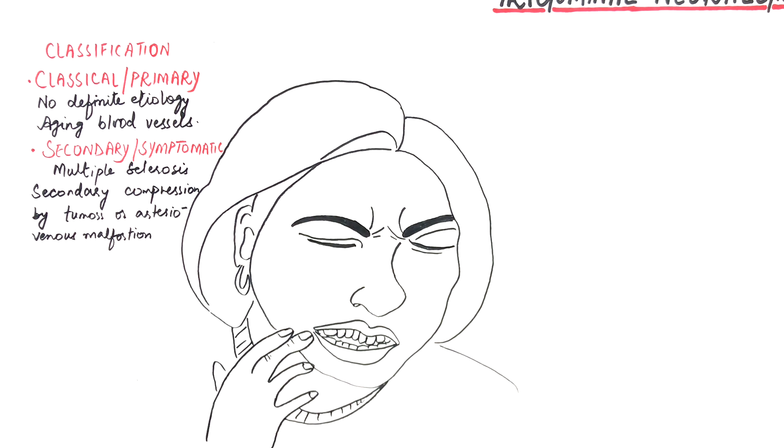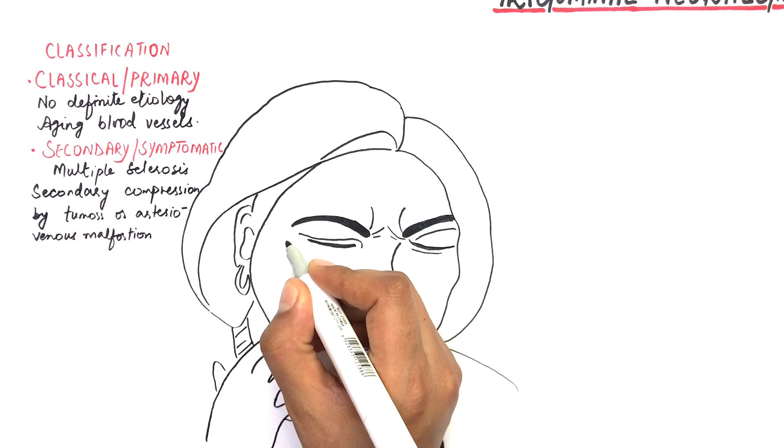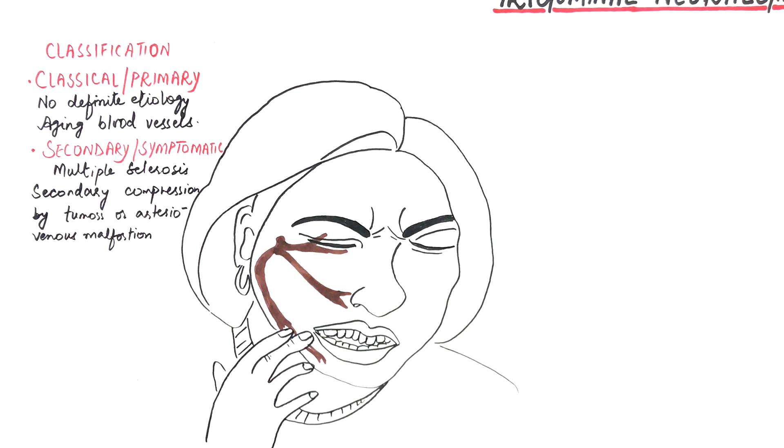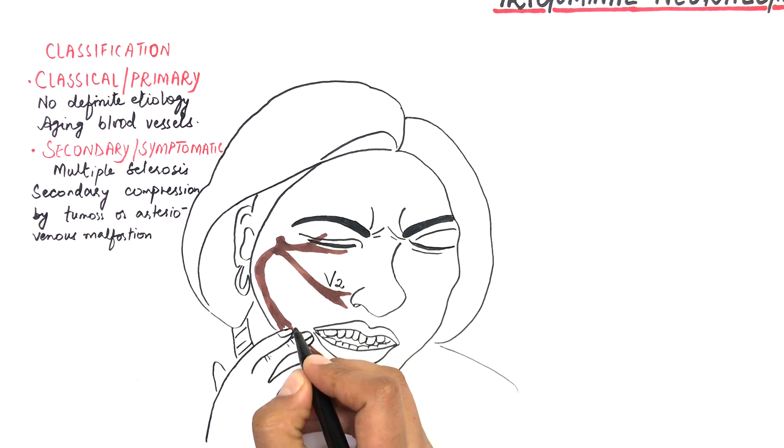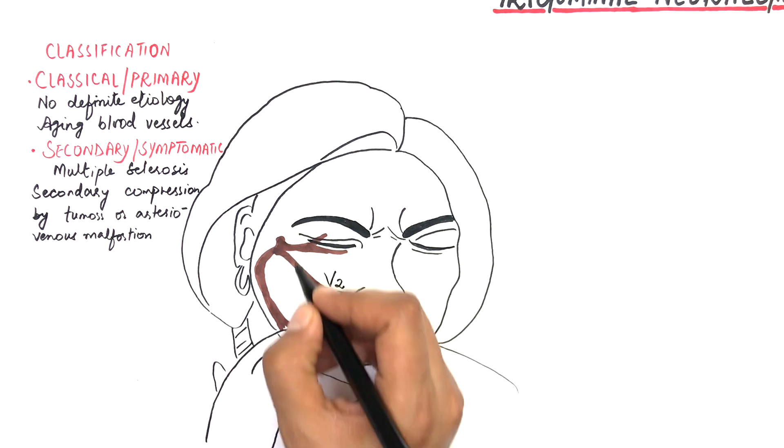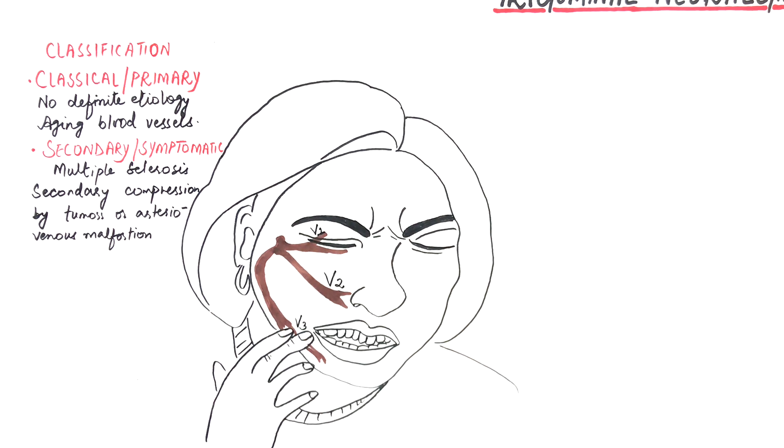In the majority of cases, the pain is located in the maxillary and mandibular divisions of the trigeminal nerve, with the maxillary branch most often affected than the mandibular branch. The ophthalmic division of the trigeminal nerve is least affected.